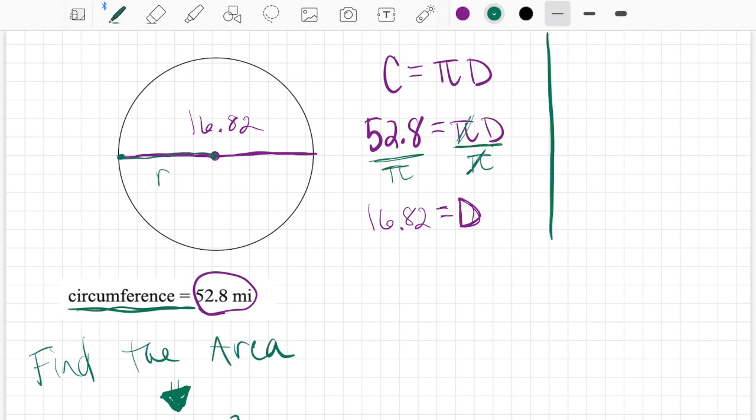If I know the diameter equals two times the radius, and if I want the radius on its own, we're going to have to divide both sides by two. Two divided by two cancels out. What I do to one side, I do to the other. So 16.82 divided by two is going to give us 8.41 miles.